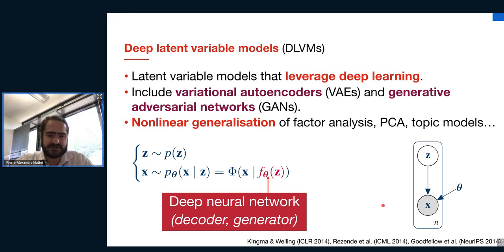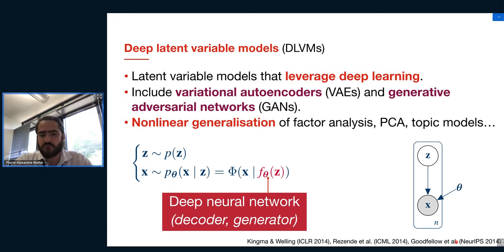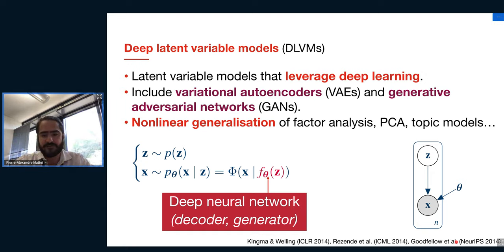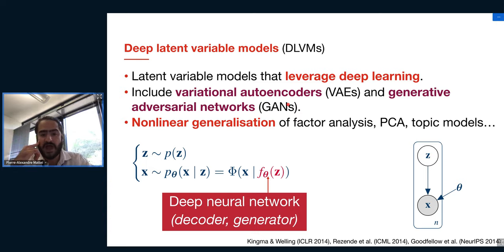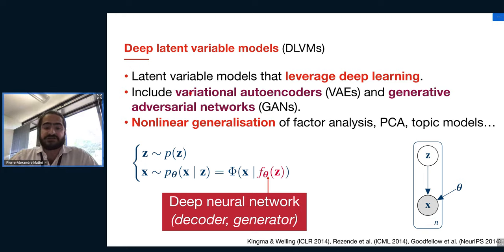These models have existed since the 1990s, but there was a renaissance in 2014 with papers by Kingma and Welling and Goodfellow and co-authors, who introduced better ways of training them. The two most common training recipes are the variational autoencoder (VAE), which we'll focus on today, and GANs, which are also very interesting but more difficult to set up.